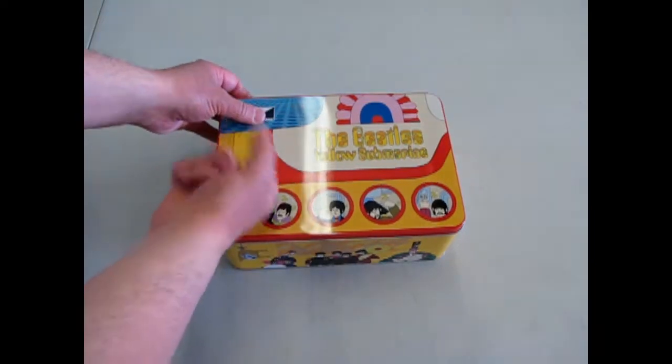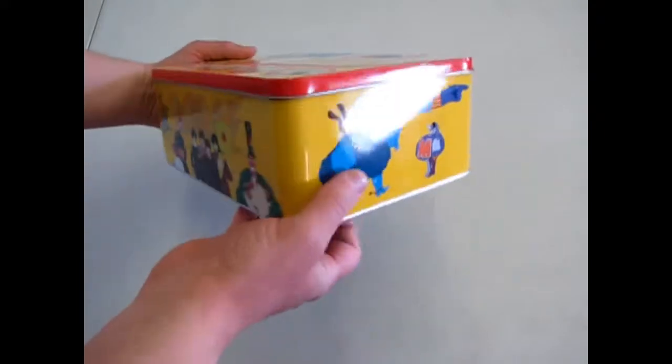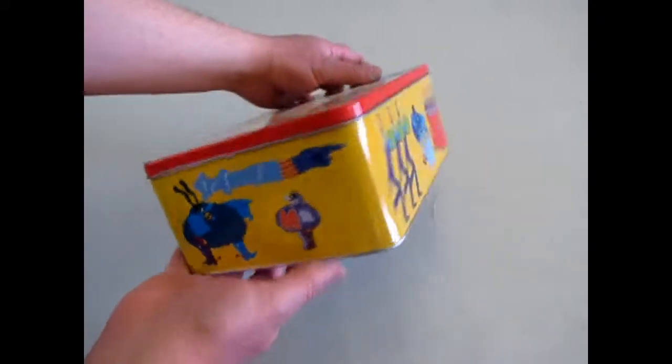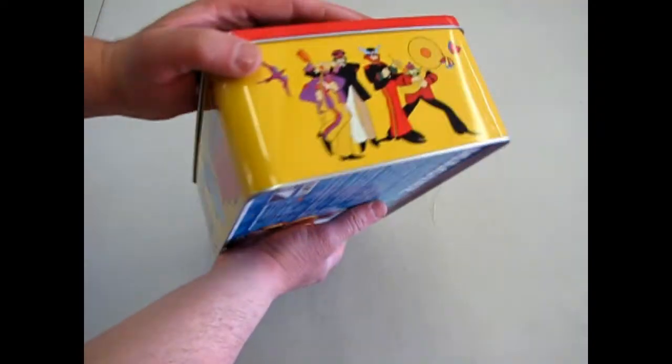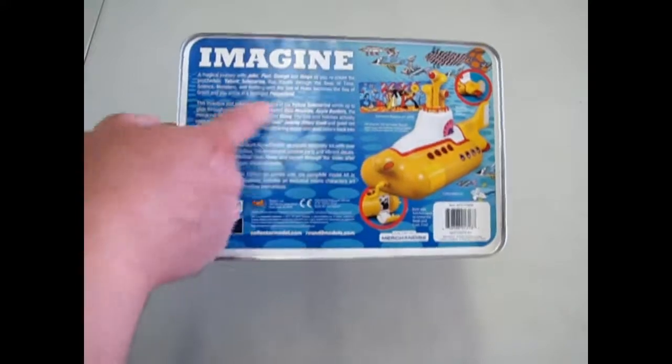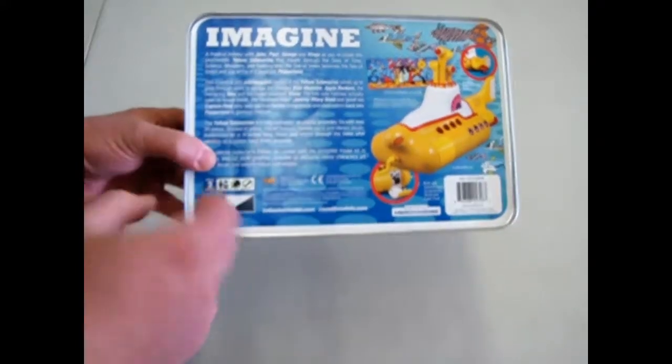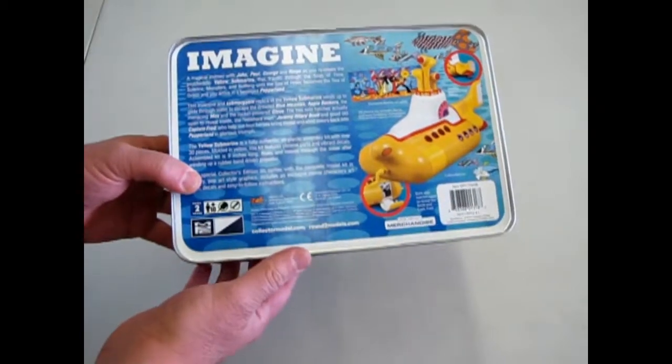This is the tin box edition and it's pretty nice because you get a tin box with some great artwork on it. Blue on the bottom, it gives you a full indication of what's going on there, including Jeremy and Captain Fred.